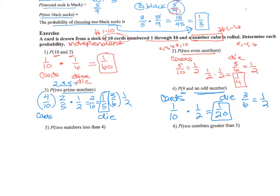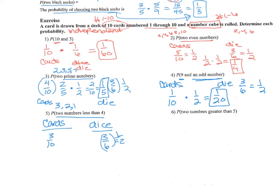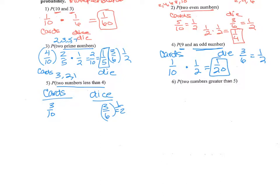Number five: the probability of two numbers less than four for both. Numbers less than four are one, two, and three. For our ten cards, three cards are less than four — three over ten. For the dice, three out of six numbers are less than four, which reduces to one half. Three tenths times one half gives three over twenty.